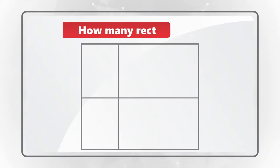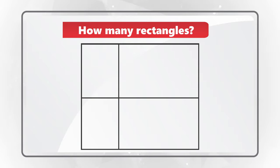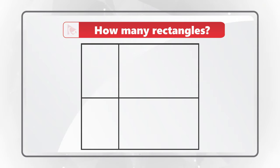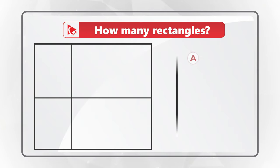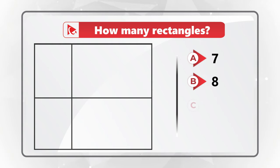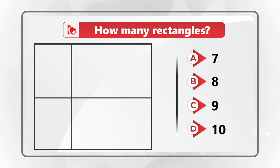You need to determine how many rectangles are present in the shape. You have 4 different choices: Choice A, 7 rectangles. Choice B, 8 rectangles. Choice C, 9 rectangles. And choice D, 10 rectangles.